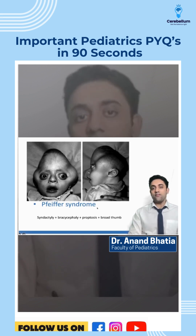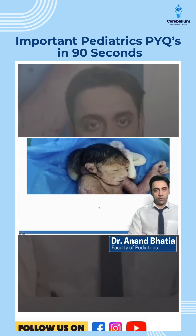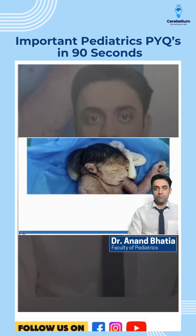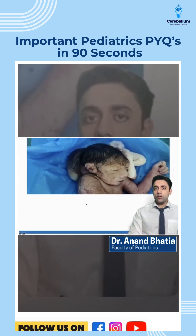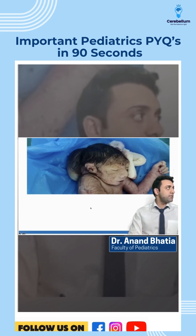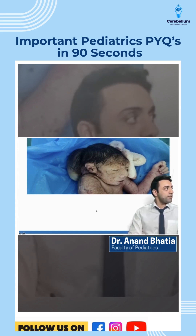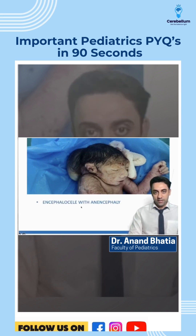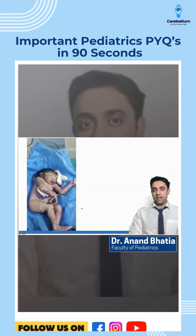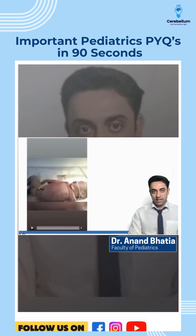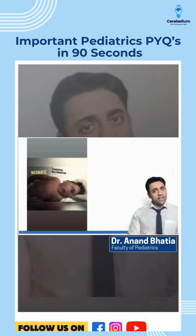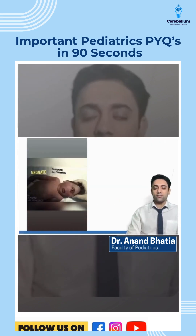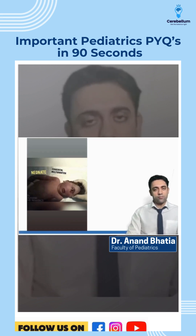Again, the cloverleaf-shaped skull seen in Pfeiffer syndrome is very important. Next, this is a neural tube defect — if you can see in this baby, this is anencephaly with encephalocele. That finishes the 90 seconds. Thank you so much everyone.